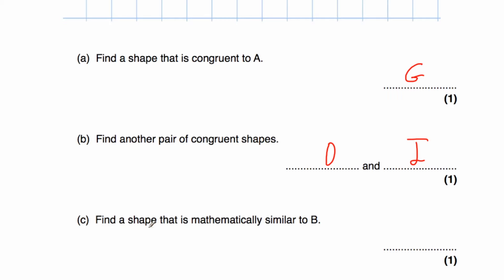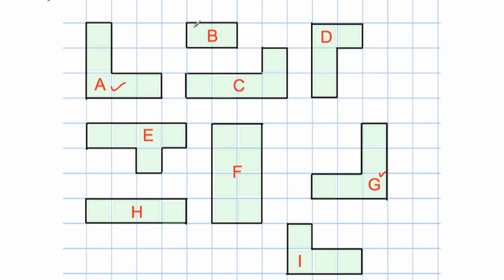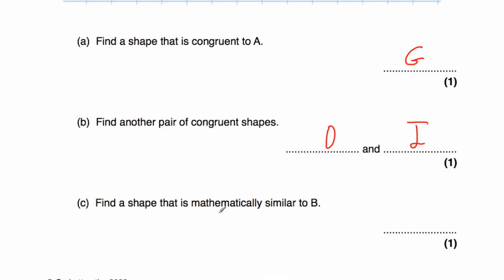Part C says: find a shape that is mathematically similar to B. That means an enlargement of shape B. Shape B is a rectangle with a length of two and a width of one. If we double those lengths, we'd get a length of four and a width of two. Rectangle F has got a length of four and a width of two, so F is mathematically similar to B — it's an enlargement of B.